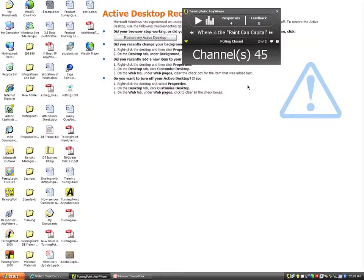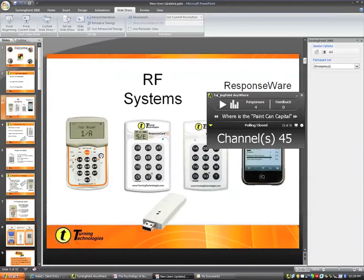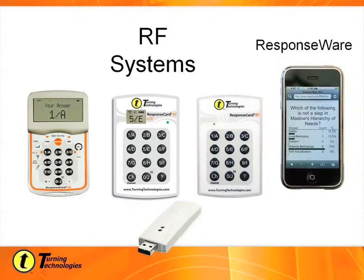Now let's talk about the TurningPoint hardware. We have three basic response cards from left to right: the XR response card, which allows fill-in-the-blank short response answers and self-paced testing; the RF LCD card, which gives answer confirmation, signal strength, battery life, and channel confirmation; and the standard RF response card, which works identically to the RF LCD but without the LCD screen in the middle.